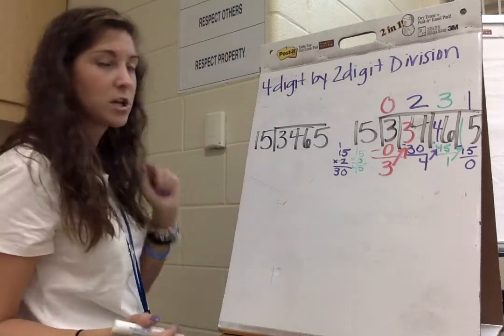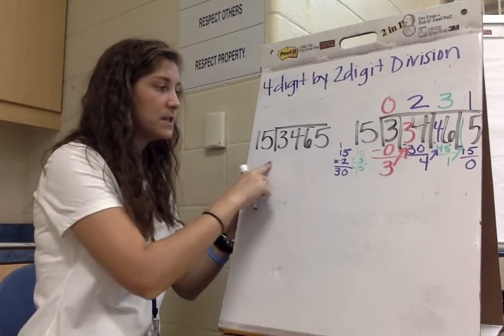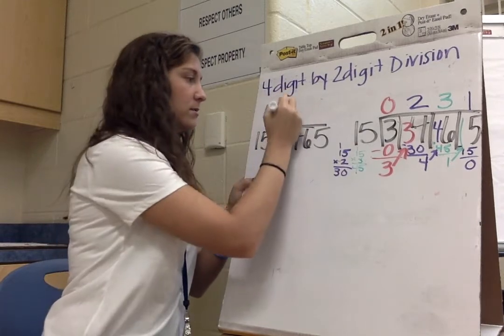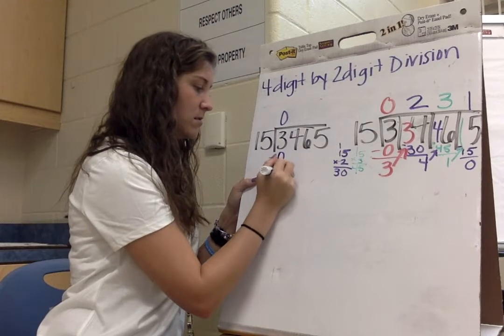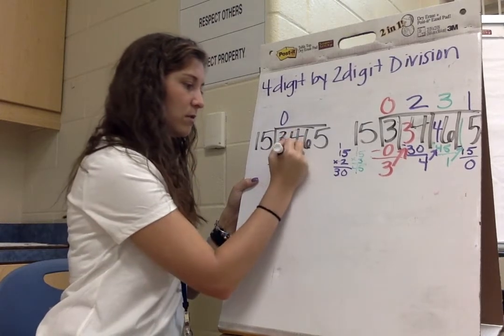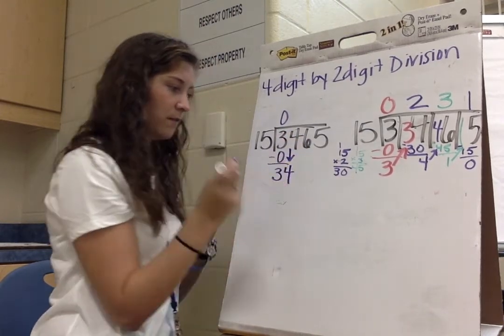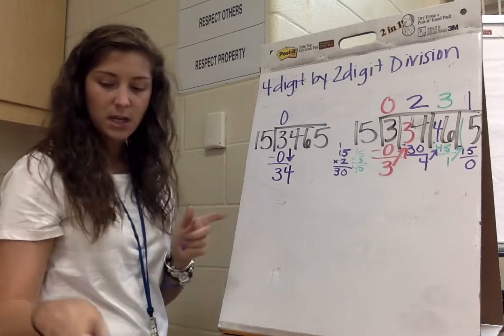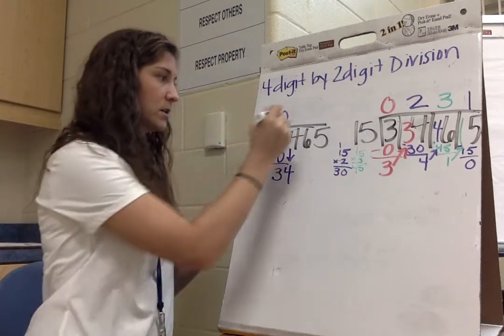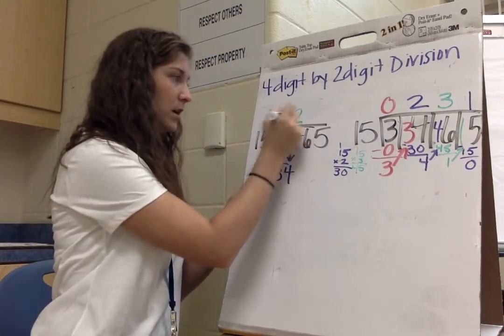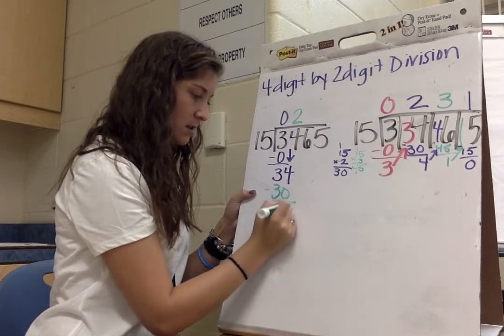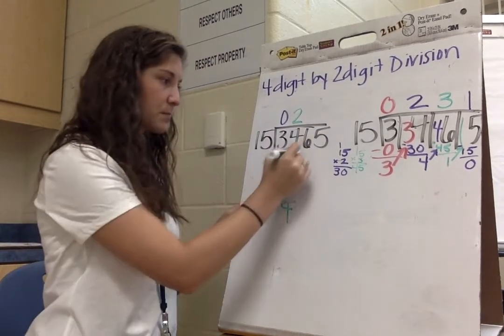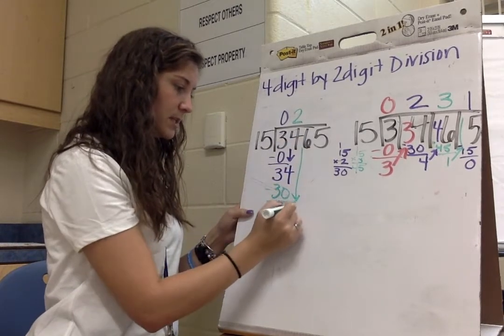Now, I'm going to show you this way. 15 goes into 3, 0 times, we still have to have that placeholder there. 0 times 15 is 0. Subtract, we're left with 3. Bring down my 4. 15 goes into 34, 2 times, because 2 times 15 is 30. We subtract, we're left with 4.